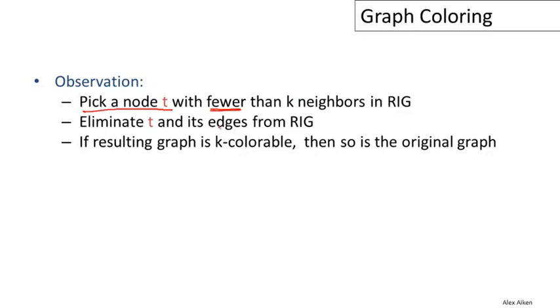We pick one node, delete it from the graph, color the remainder of the graph—that's a smaller problem with one fewer nodes. When we're done with that, I claim that we can find a coloring for the original graph.